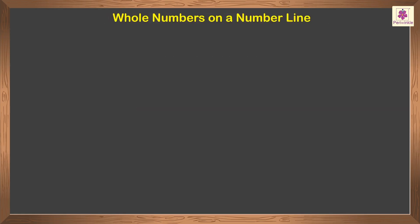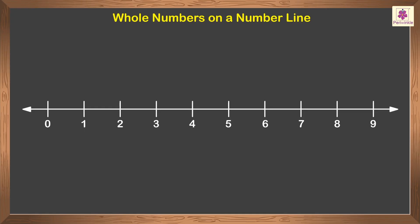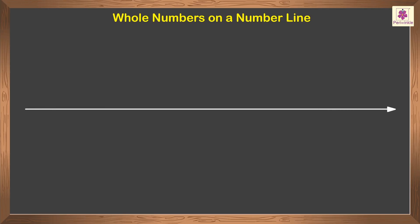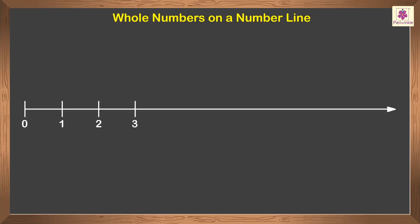Whole numbers on a number line: on a number line, numbers are represented as points and distances. To represent whole numbers on a number line, draw a straight horizontal ray. Label one end of the line as zero. Mark another point to the right of zero and label it as one. The distance between zero and one is the unit distance.